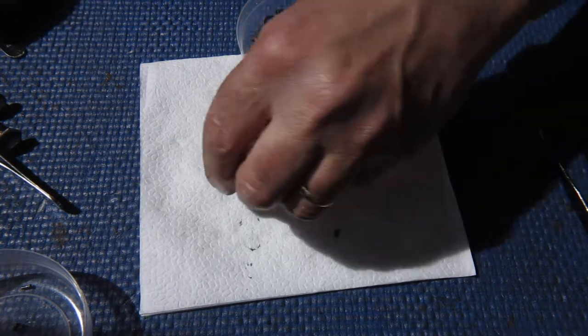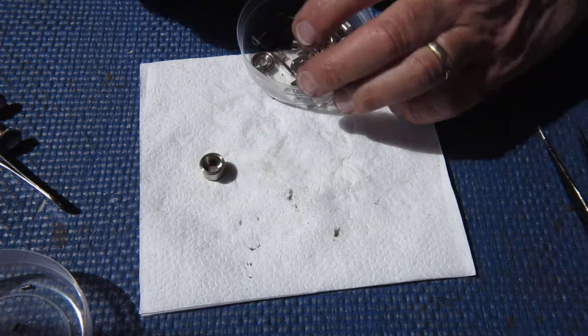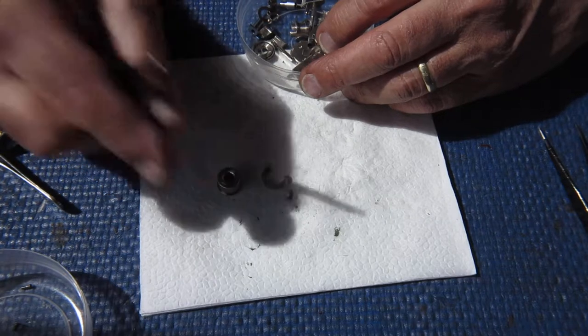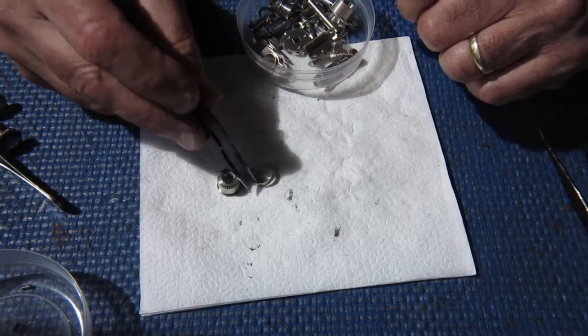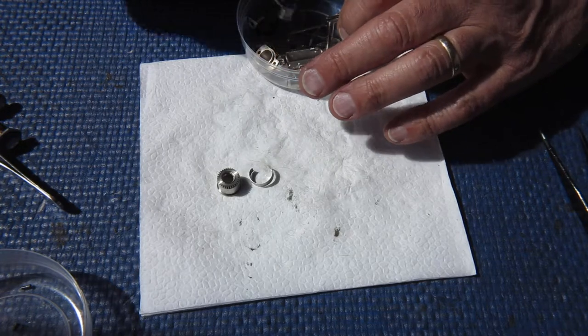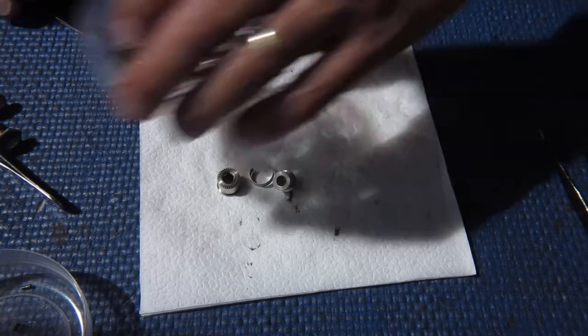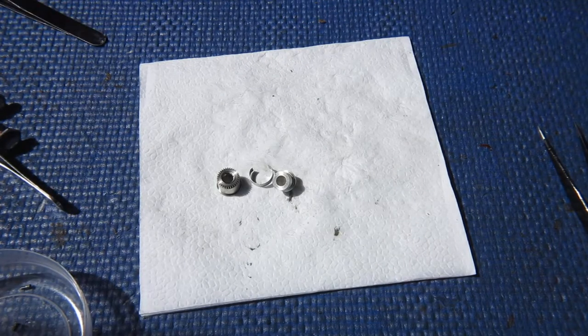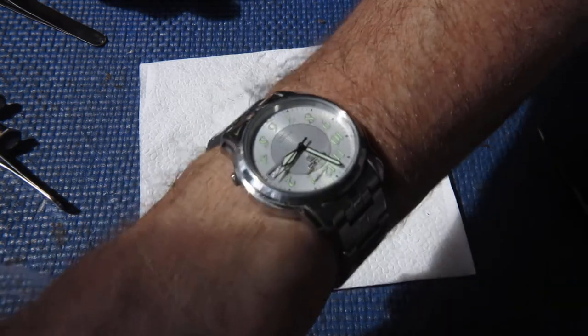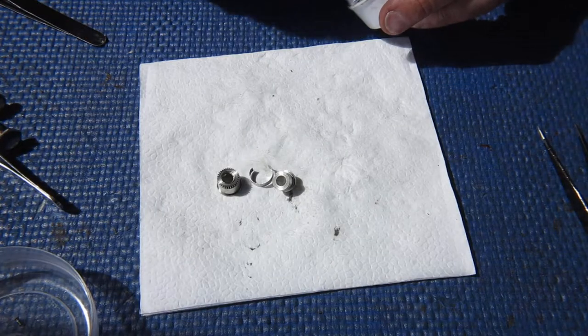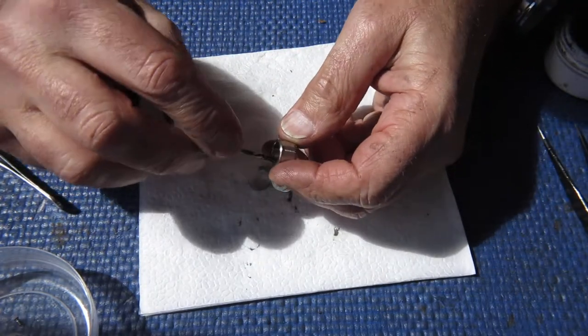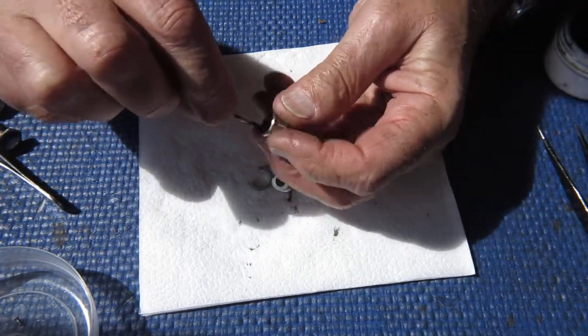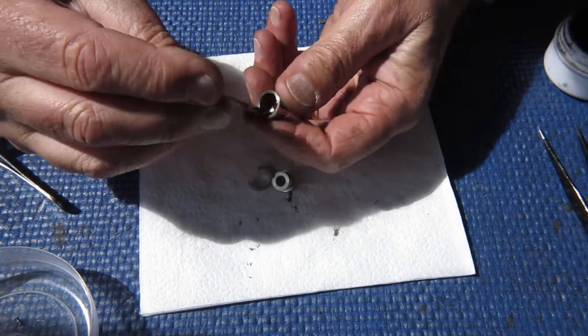So start with the clutch assembly. Three pieces: the outer, the spring, and the inner. Typically I use my graphite grease for doing this job, and basically I just wipe that around the inside surfaces here. That's where that spring is going to bear.